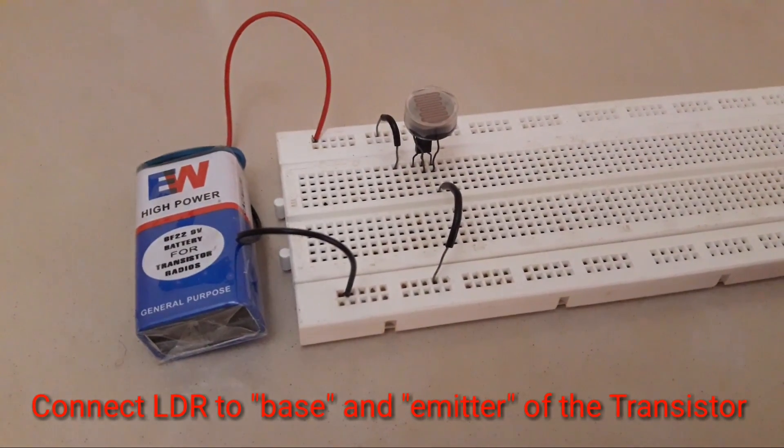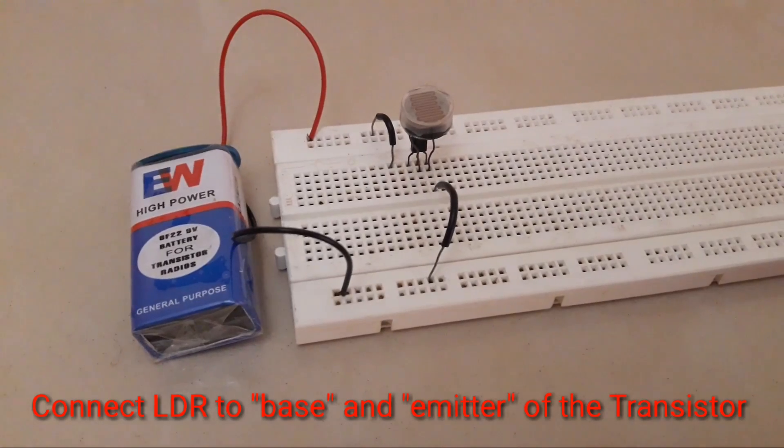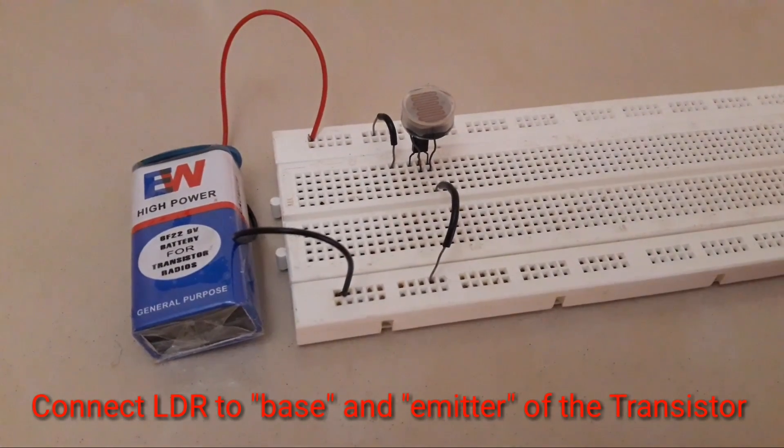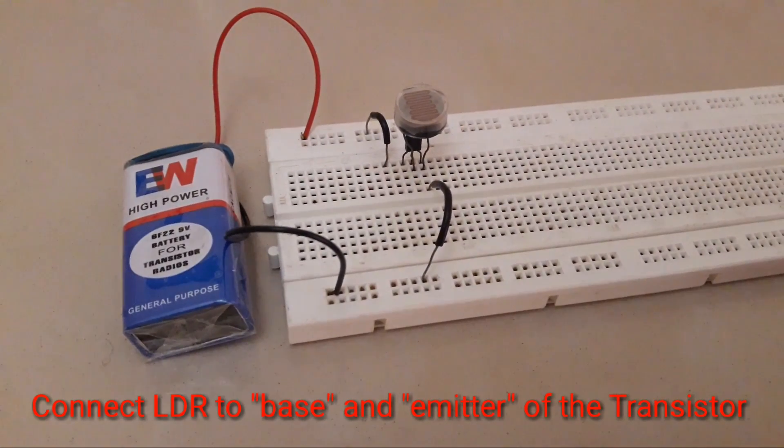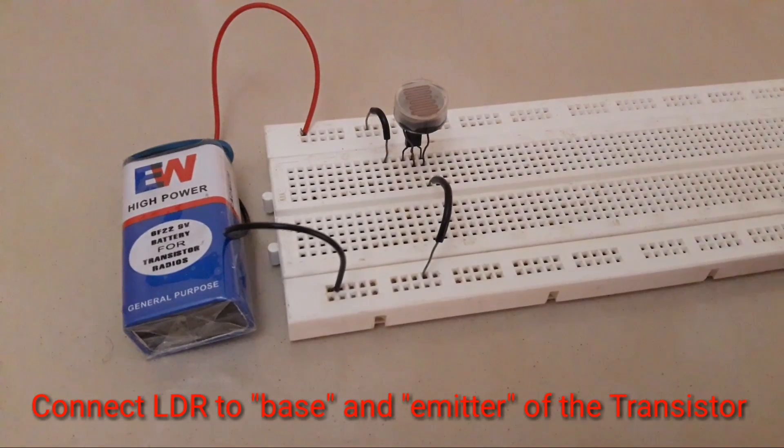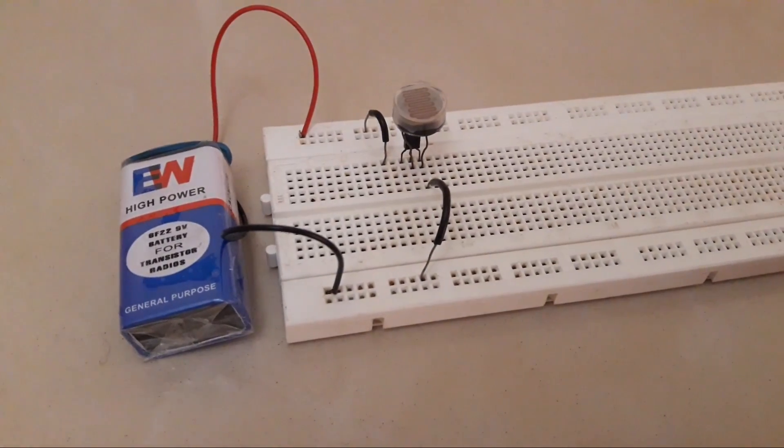So now you can see that I have connected the LDR from the base and emitter of the BC 547 transistor, and the emitter connected to the negative side of the battery.